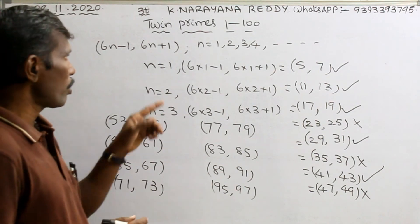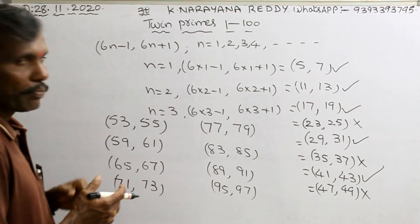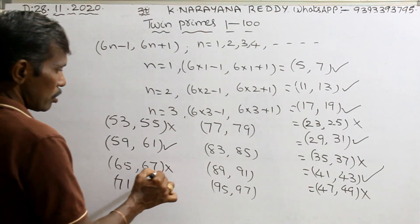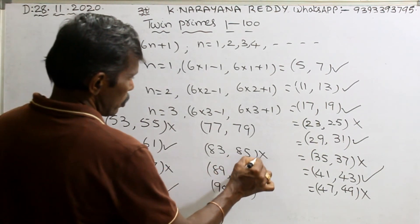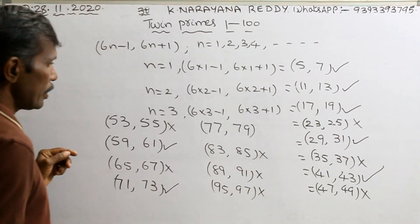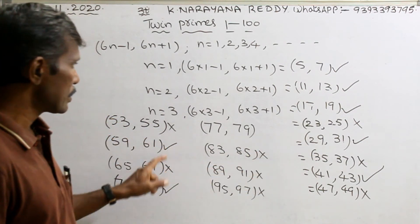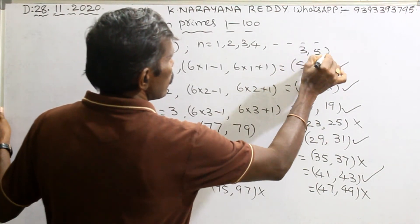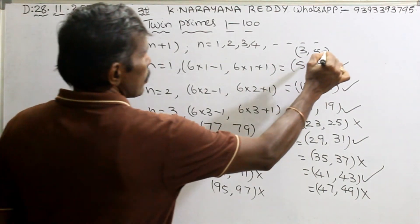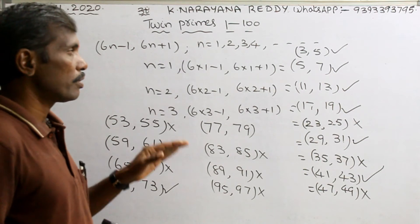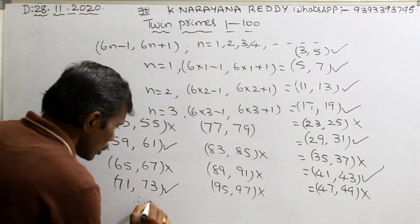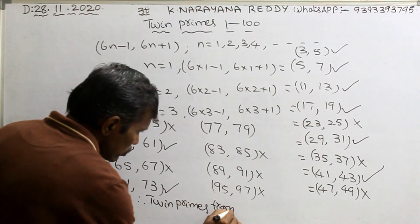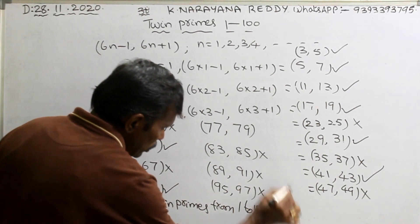Among these formula-generated pairs, we identify which are actually twin primes — both numbers must be prime. After checking each pair, we find 7 valid twin primes from the formula. But the pair (3, 5) is not included in the formula, so adding that gives us 8 twin primes total from 1 to 100.